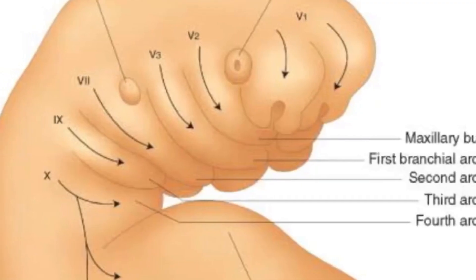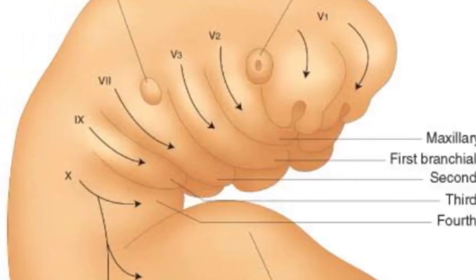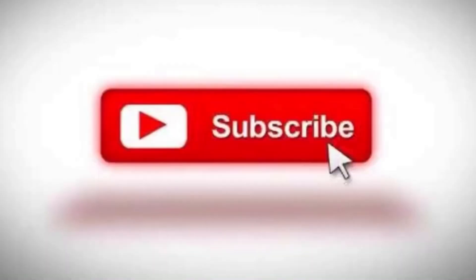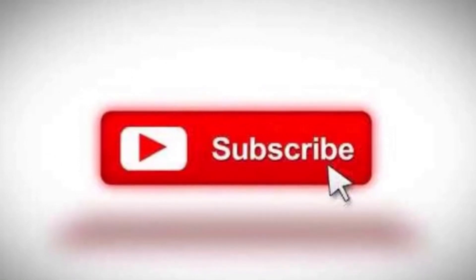Just remember tympanic branch of glossopharyngeal is called Jacobson's nerve. And the auricular branch of vagus is called Arnold's nerve. Let's talk about muscles and arteries in the next video. Thank you.